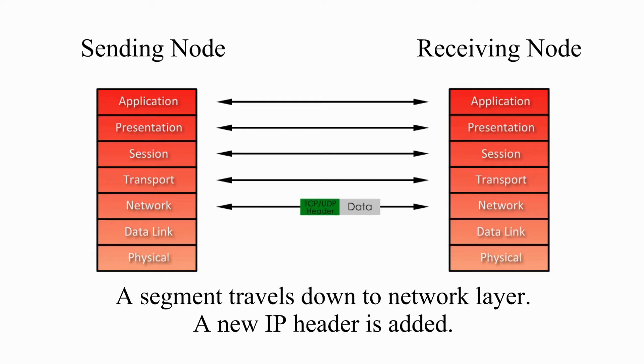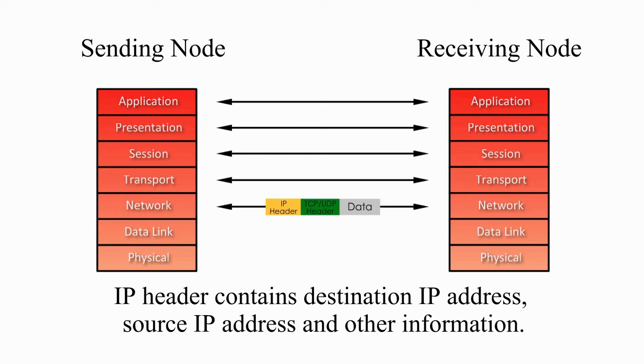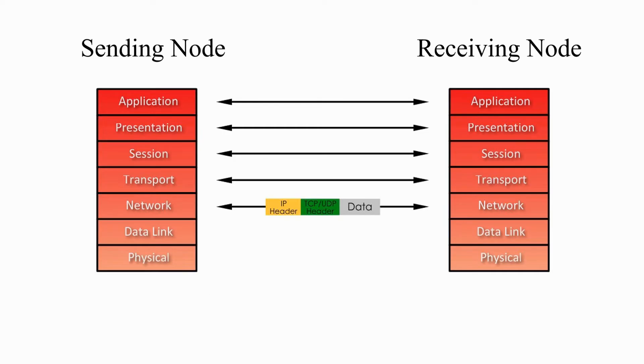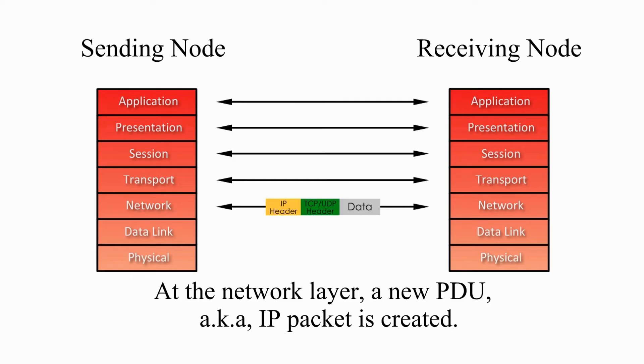A segment travels down to network layer. A new IP header is added. IP headers contain destination IP address, source IP address, and other control information. At the network layer, a new PDU, aka IP packet, is created.